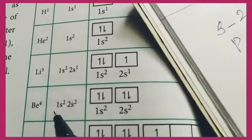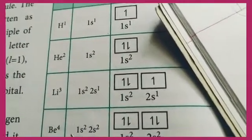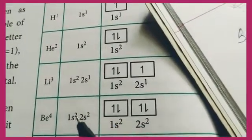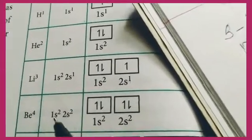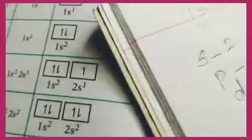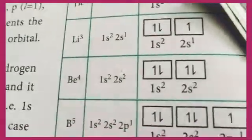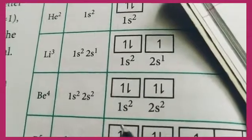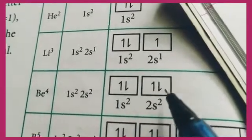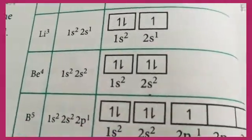Next, element number 4 is beryllium. Its configuration is 1s²2s². The 1s orbital has 2 electrons and the 2s orbital also has 2 electrons, giving a total of 4 electrons. In the orbital diagram, both the 1s and 2s boxes are completely filled with 2 electrons each.